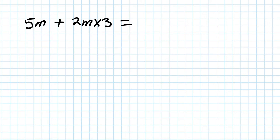Let's say 5m plus 2m times 3. Step number 1, we need to do order of operations. So this means we need to simplify this first. So 2m times 3 is 6m.